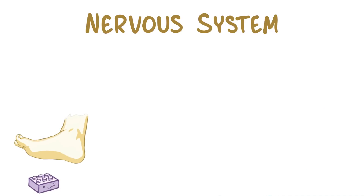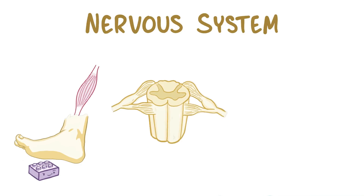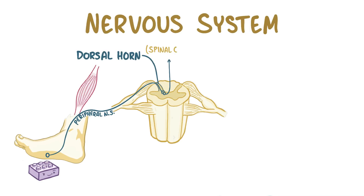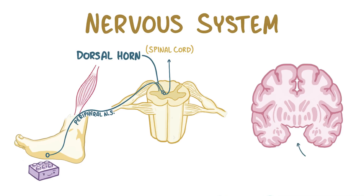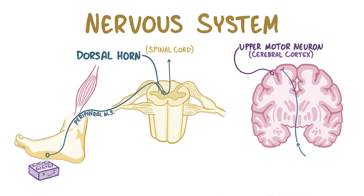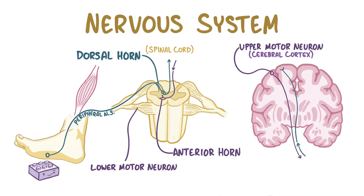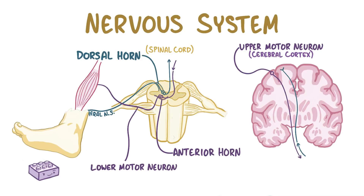For example, if you step on a lego in your living room, the sensation of discomfort is carried from the nerves in your foot through the peripheral nervous system to reach the dorsal horn in the spinal cord, and then travels up the spinal cord to the brain. In response, your brain sends a message through the upper motor neurons, which are part of the cerebral cortex, and down the spinal cord to a lower motor neuron located in the anterior horn of the spinal cord. From there, the signal gets delivered to the leg muscles and allows you to lift your foot. In addition to sending signals from the brain, these lower motor neurons also release trophic or growth factors that promote muscle growth in the muscles that they innervate.